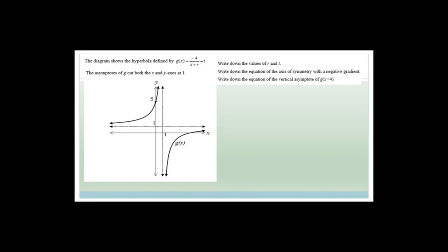Next question. This is a hyperbola and they've given the formula as g(x) = −4/(x + r) + t. The asymptote of g cuts both axes at 1, so it's been shifted 1 across and 1 up. Write down the values of r and t. t = 1 because it's been shifted up by 1. For the horizontal shift, you need to think in the opposite direction: r = −1.